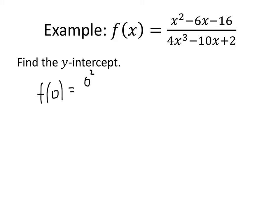On the top, we get 0 squared minus 6 times 0 minus 16. And on the bottom, we get 4 times 0 cubed minus 10 times 0 plus 2. And when we simplify that, on the top, we just get negative 16. On the bottom, we just get 2. So this is negative 8.